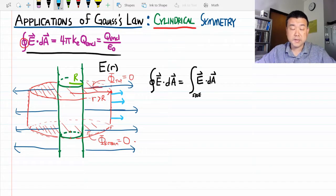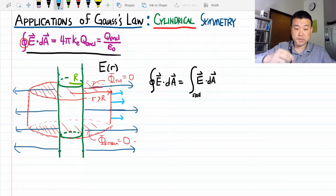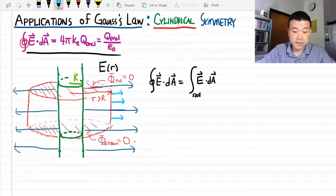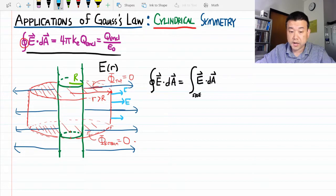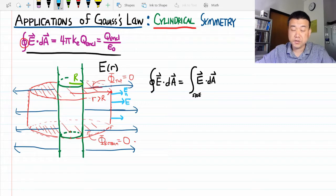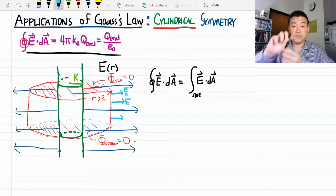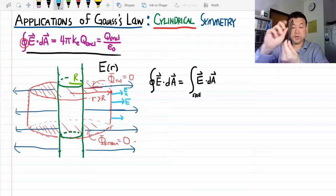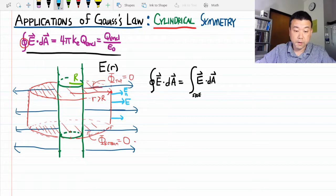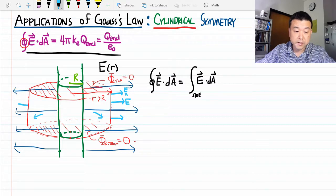From translational symmetry, the electric field magnitude here should equal the magnitude there. Otherwise, you don't have translational symmetry. From rotational symmetry, the electric field at one point, another point here, here—they all have the same magnitude.